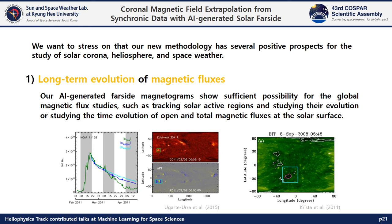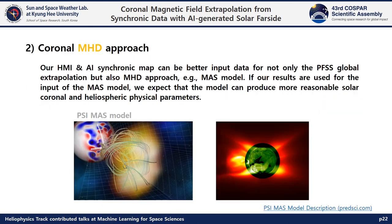There are several examples of how our new data and methods can be applied. First, the AI-generated far-side magnetograms can be used for the long-term evolution of sunspots and solar magnetic fluxes. Second, our synchronic map can be better input data for not only the PFSS model but also MHD approaches. If our results are used as input for MHD approaches, we expect that the results can produce more reasonable solar coronal and heliospheric physical parameters.